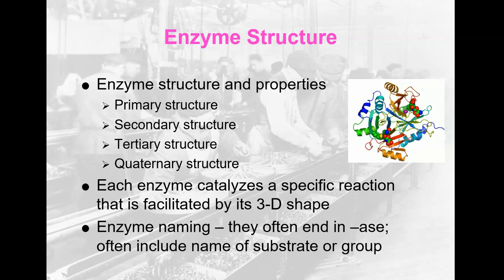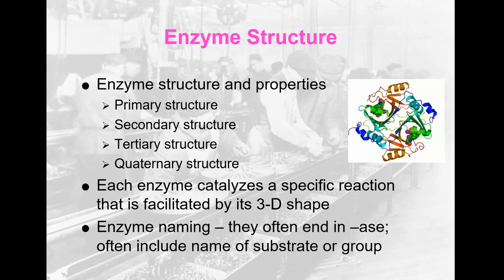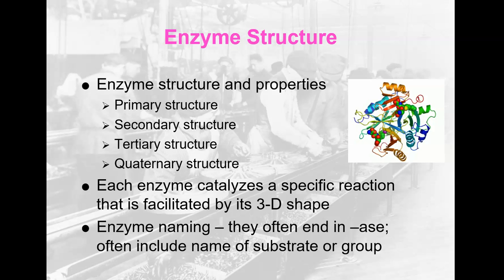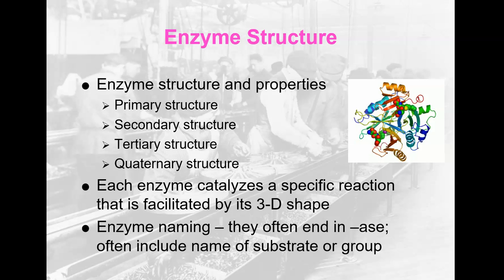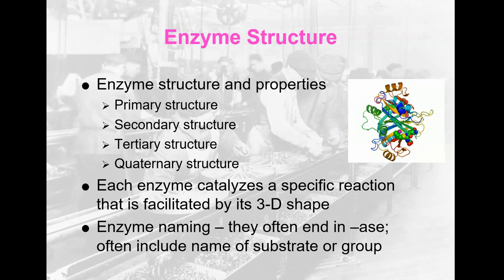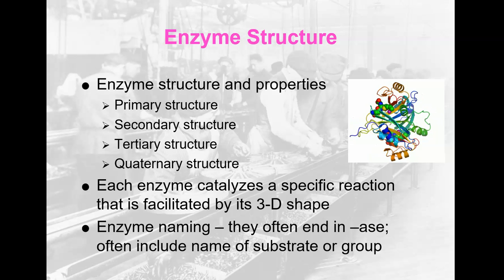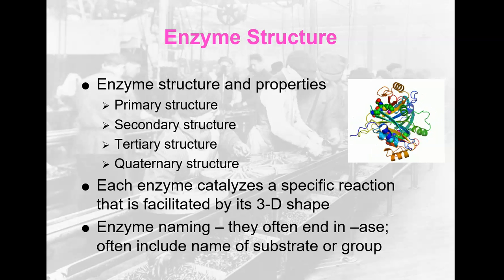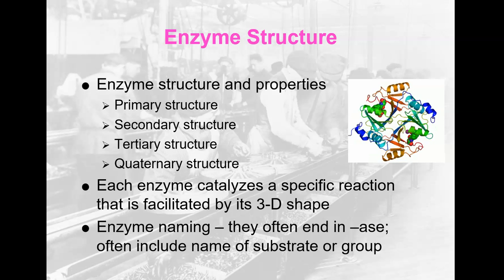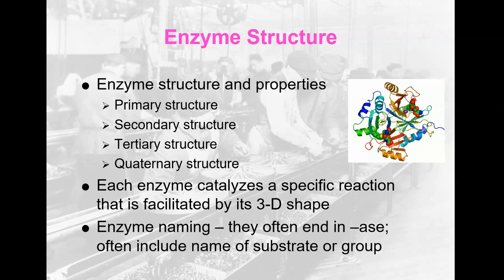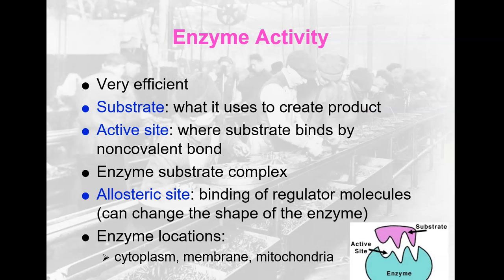Each enzyme catalyzes a specific reaction and is often named after that reaction, and it is facilitated by its three-dimensional shape. The shape is what allows the reactants to bind to the enzyme and then form the product. A lot of the enzymes end in '-ase', so you can pretty much bet if you see a word that ends in '-ase', you are talking about an enzyme. They often include the name of the substrate or group that it's working on. Enzymes are very efficient, which means it only takes a little bit to do a lot because it can repeat the same reaction over and over again.